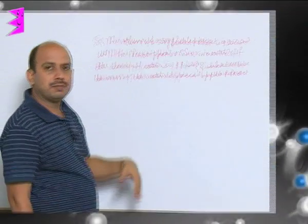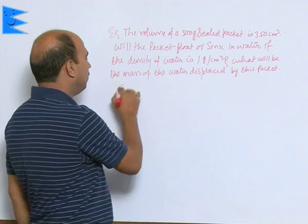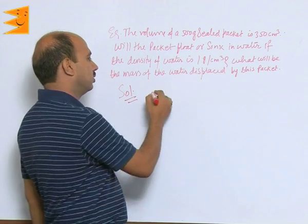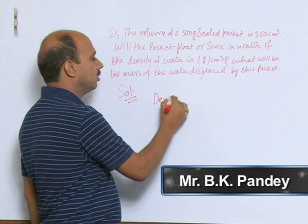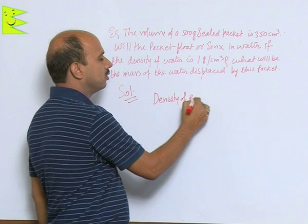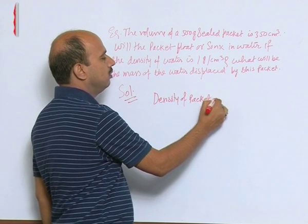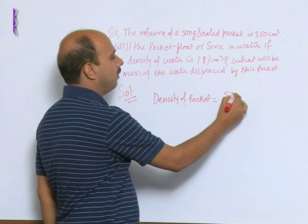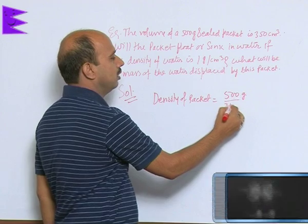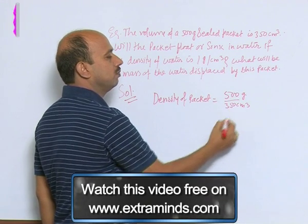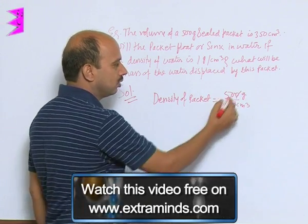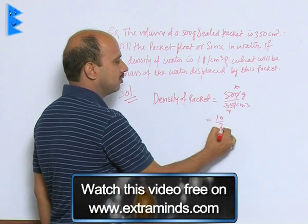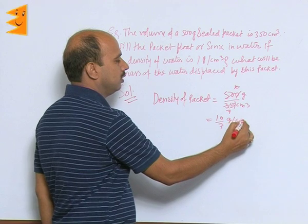We have done the previous question in the same manner. First we will calculate density of the packet. Density of packet is equal to mass upon volume, so 500 gram divided by 350 centimeter cube. This will get cancelled, this is 10 and 7, so that is 10 by 7 gram per centimeter cube.